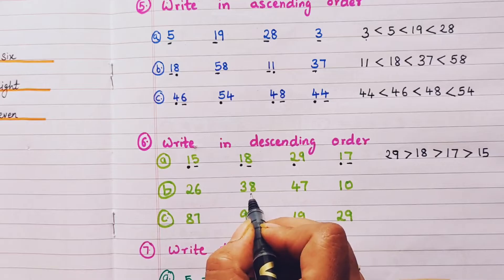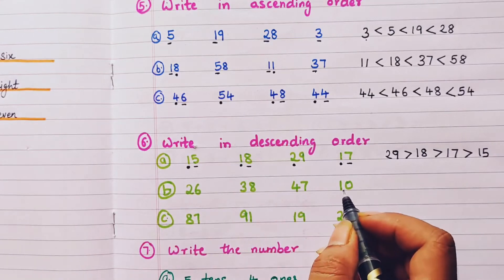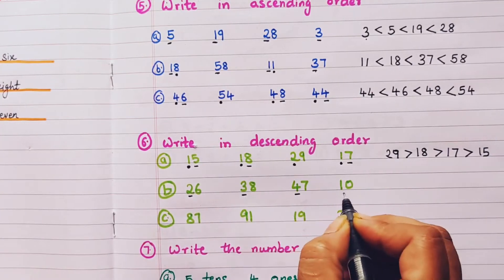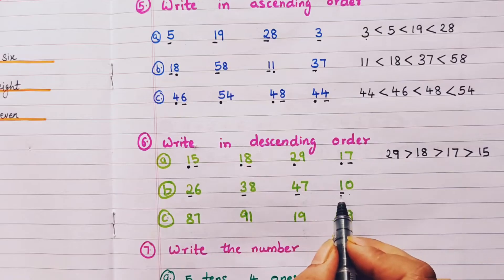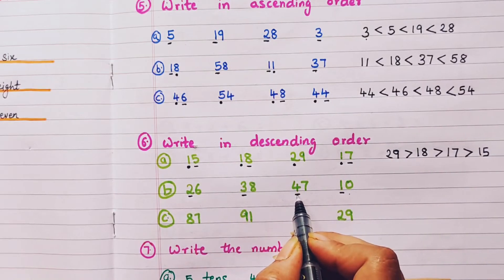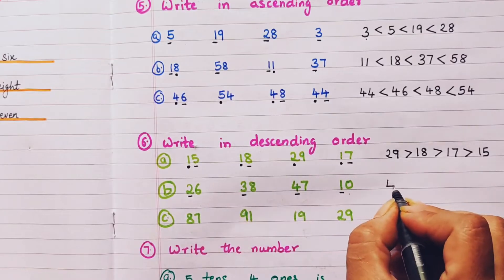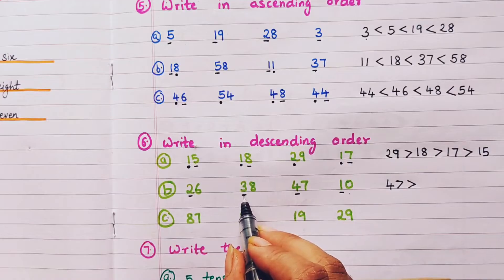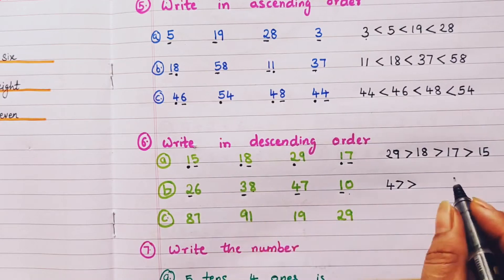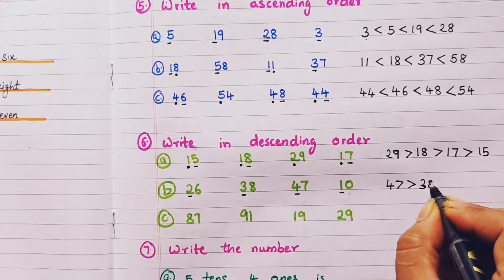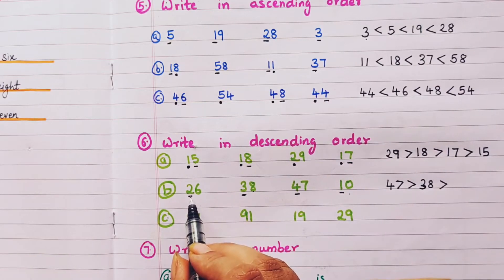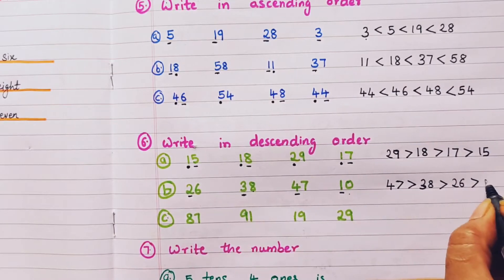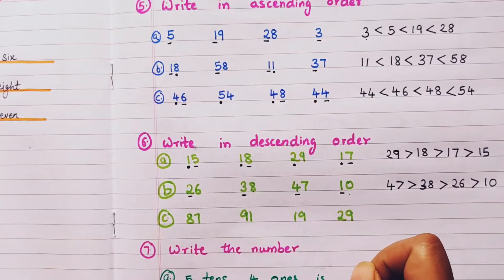Next set: 26, 38, 47, and 10. Compare tens: 2, 3, 4, 1. Largest tens digit is 4, so 47 is first. Then 3 so 38, then 2 so 26, then 10 last. Descending order: 47, 38, 26, 10.